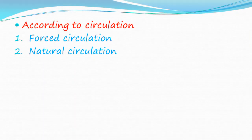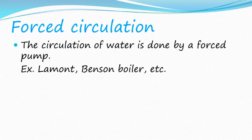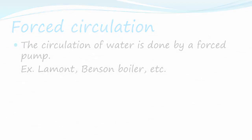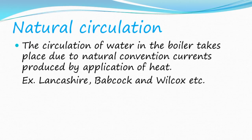Classification according to circulation: forced circulation and natural circulation. In forced circulation, the circulation of water is done by a forced pump. Examples: Lamont, Benson boiler, etc. In natural circulation, the circulation of water takes place due to natural convection currents produced by the application of heat. Examples: Lancashire, Babcock and Wilcox, etc.